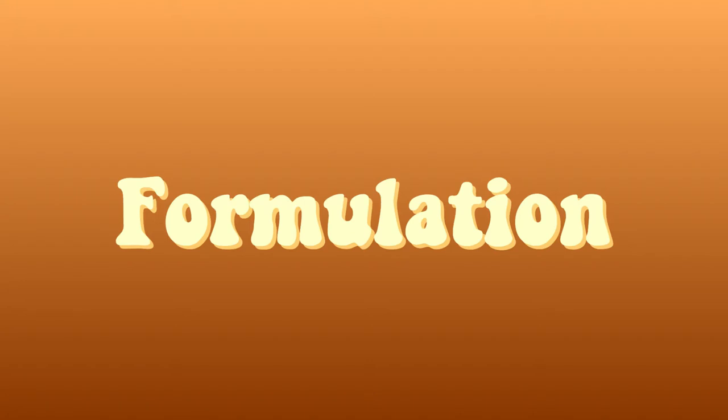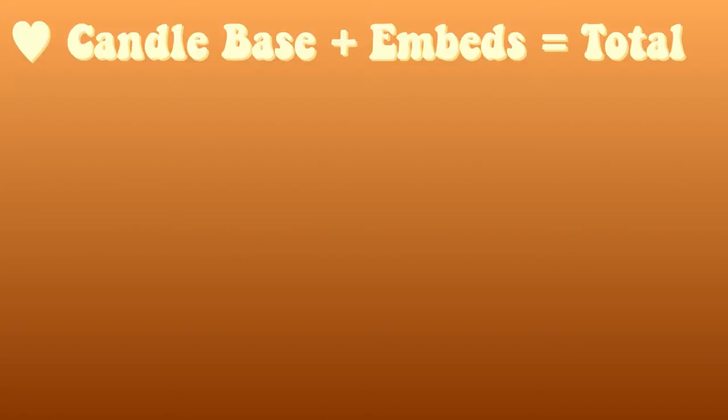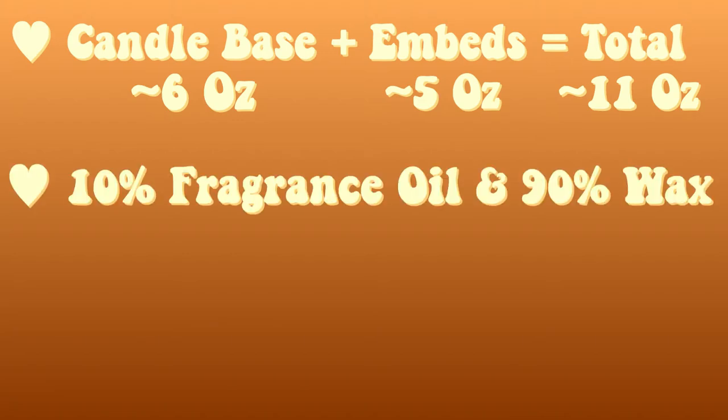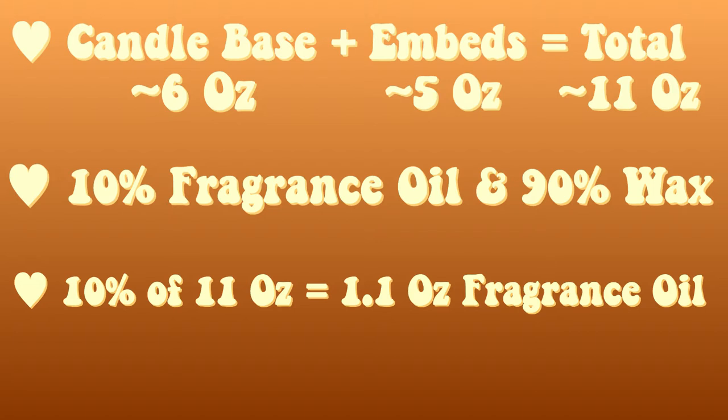Next we're gonna figure out our ratio of candle wax versus fragrance oil. Now I want to make sure that I make enough to fill both my candle base and the embeds. So I'm gonna go with 11 ounces overall for this. It can be a little off but it doesn't have to be perfect. That's gonna make my candle about 10% fragrance oil and the other 90% wax. If you want your candle to smell stronger feel free to add the percentage or add a little bit more.